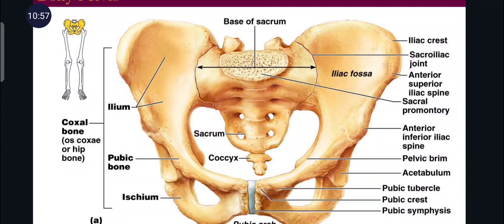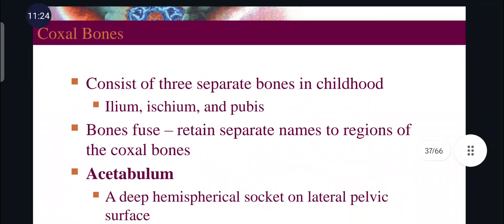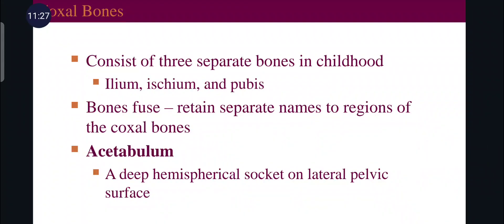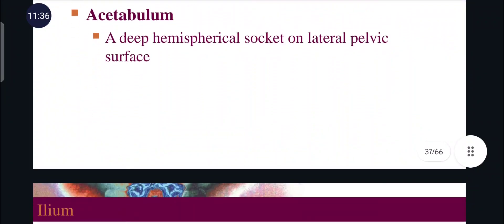Anteriorly, the two pelvic bones are joined at the pubic symphysis. Each pelvic bone is divided into ilium, ischium, and pubis — so each coxal bone is a fusion of these three bones. The pubis region contains the acetabulum cavity, which helps in the articulation of the femur with the pelvic girdle, forming the hip joint. The acetabulum cavity is a deep hemispherical socket on the lateral pelvic surface.